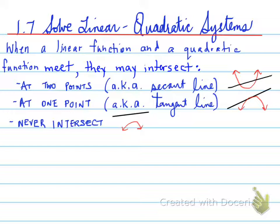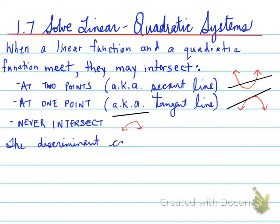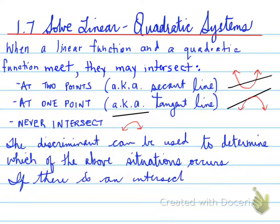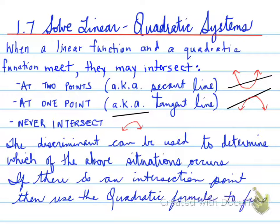When we think about where they meet at two, one, or zero points — where have you heard this before? That's right, via the discriminant. The discriminant can be used to determine which of the above situations occurs. Once we know that, if there is an intersection point, we can use the quadratic formula or factoring to find the x values.